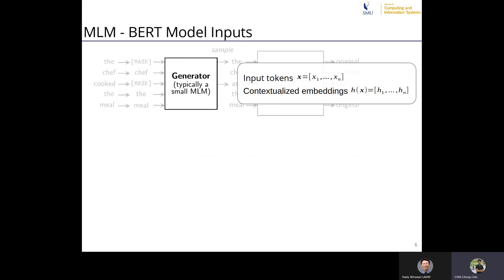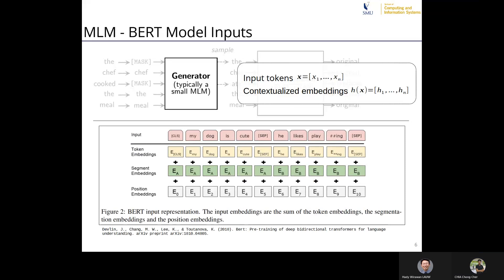The reason contextual models can't be compared on the fairness evaluation is that inside the generator and discriminator, contextual embeddings are used. For GloVe, each word has a fixed embedding regardless of where it appears in a sentence. But for BERT, even at the first layer, position embeddings and segment embeddings are added, so the same word like 'dog' has a different input embedding depending on its position and sentence context. The transformer stack further modifies embeddings using attention over other words, making the fairness evaluation incompatible.